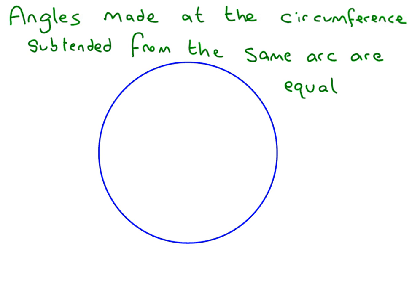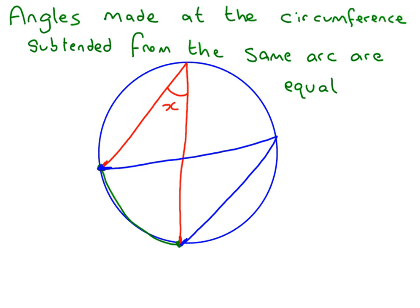Angles made at the circumference subtended from the same arc are equal. Now, that's a posh way to say if you've got an arc which is just part of your circle, part of the circumference of your circle, and you draw a line from one side and draw a line from the other side of this arc, you're going to make an angle at the circumference. Let's call it x. If we draw a different line from the same arc, this green arc, and do another angle at the circumference, then guess what? It is also going to be the same angle as this one.